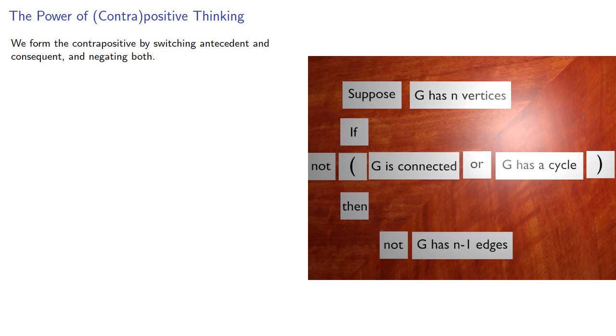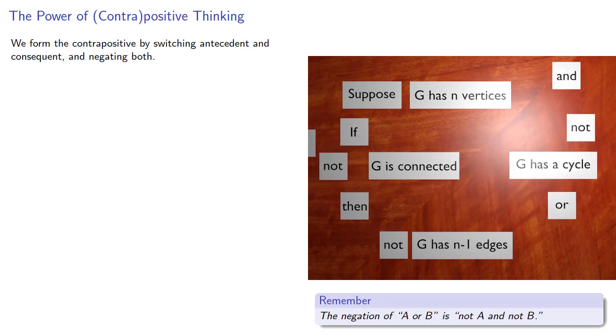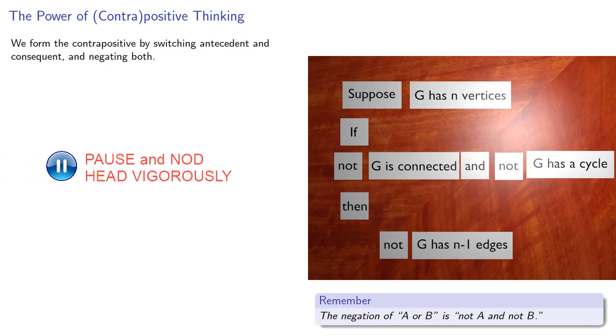So we have this negation of a disjunction, either or, and remember the negation of A or B is not A and not B. And while logically speaking, we can say not G is connected, not G has a cycle, not G has n-1 edges.